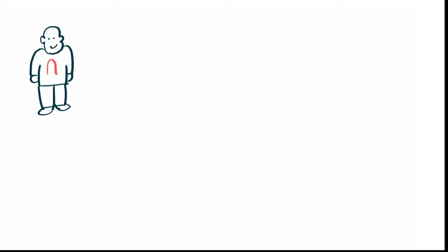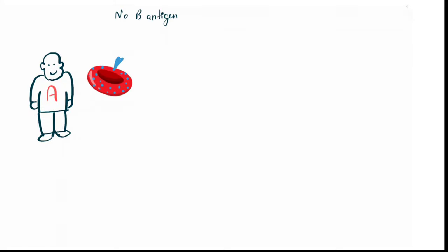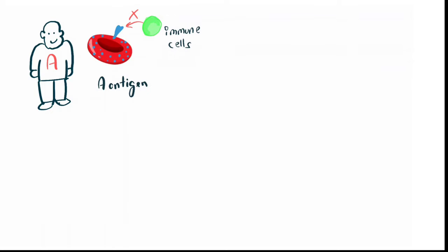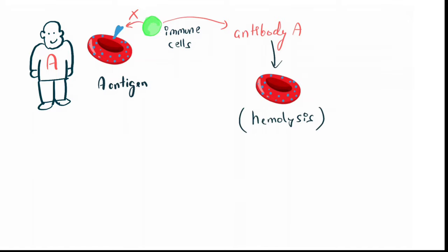An antigen is a substance that has the capacity to produce an immune reaction. But in your own body, your body does not produce antibodies against your own antigens. If you have blood group A, you have the A antigen, but your body will not produce antibodies against this antigen. However, if your body somehow made antibodies against the A antigen, it would lead to clumping of your RBC and could also lead to hemolysis.